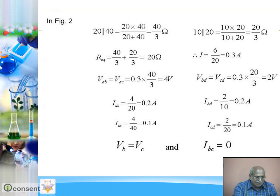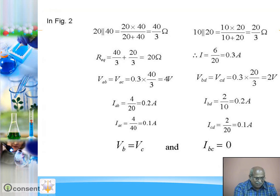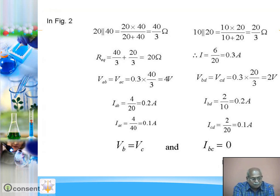Now for the current in each branch. Current from A to B: V is 4, R is 20, so 0.2 ampere. Current from B to D: V is 2, R is 10, so 2 divided by 10 is 0.2 ampere. Current from A to C: V is 4, R is 40, so 0.1 ampere. B and C are connected together, so potential at B and potential at C are the same. Because potential at B and C are the same, current will flow from higher potential to lower potential; if B and C are at the same potential, no current will flow from B to C. So current from B to C is 0.